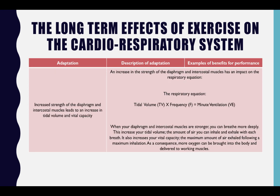The final adaptation: increased strength of the diaphragm and intercostal muscles leads to an increase in tidal volume and vital capacity. This has an impact on the respiratory equation: tidal volume × frequency = minute ventilation. When your diaphragm and intercostal muscles are stronger, you can breathe more deeply. This increases your tidal volume — the amount of air you can inhale and exhale with each breath — and your vital capacity — the maximum amount of air exhaled following a maximum inhalation. As a consequence, more oxygen can be brought into the body and delivered to the working muscles.